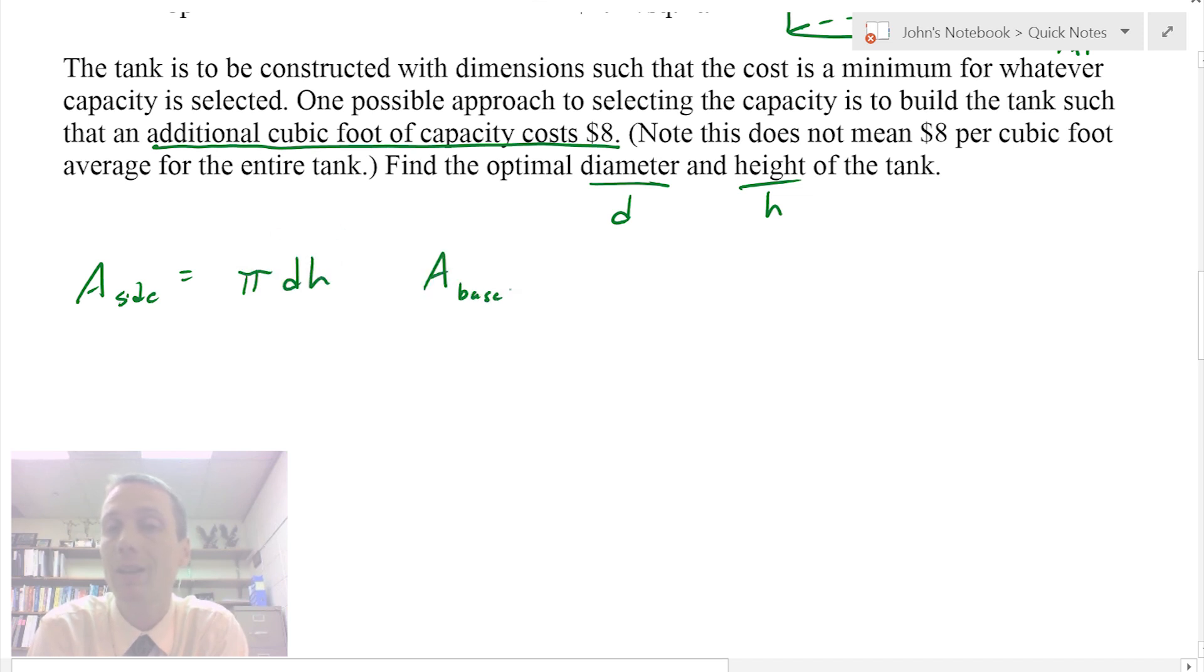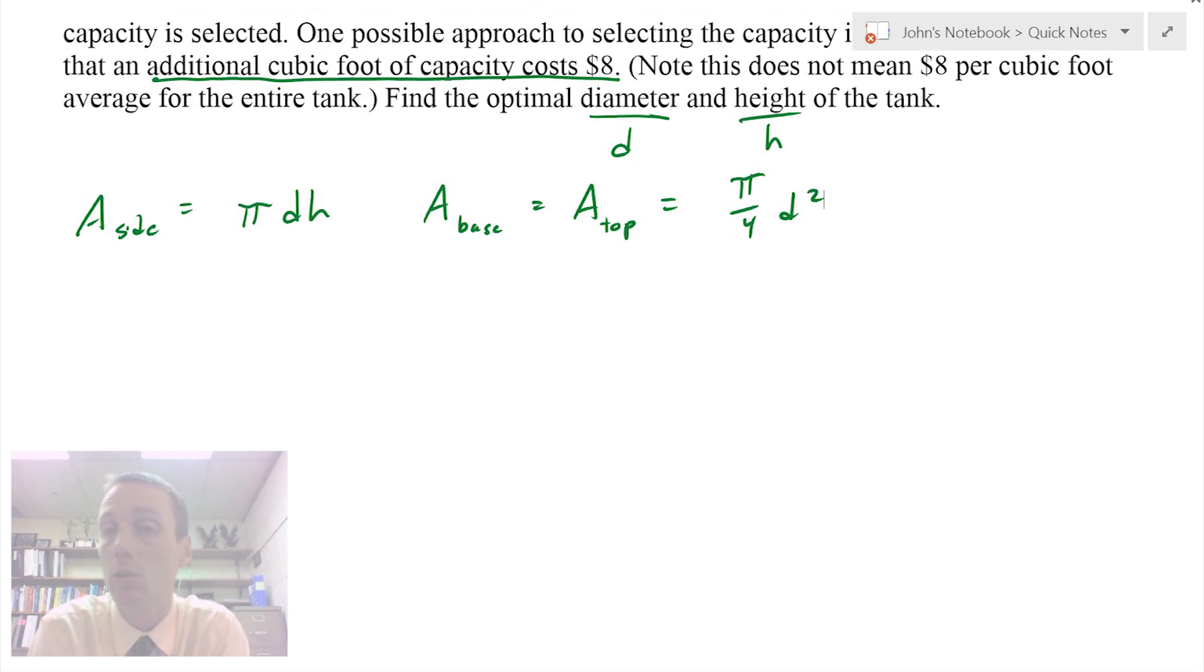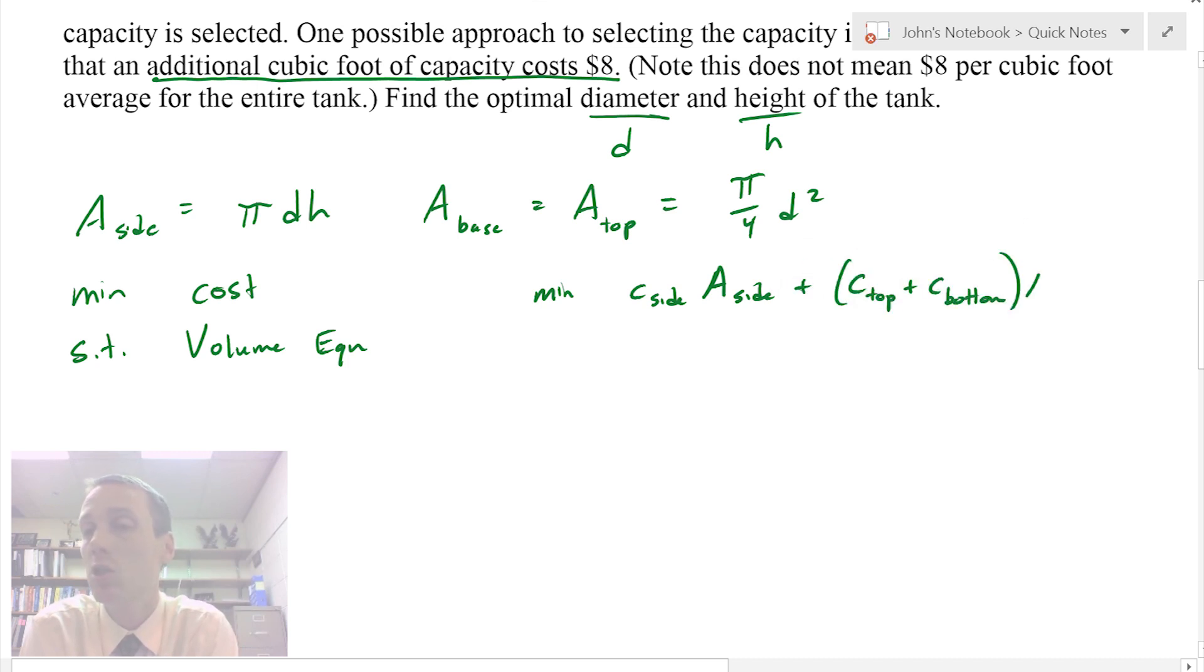First, we'll write out the area equations. The area of the side, and the area of the base and top are equal to each other. Then I'll write out the optimization problem: minimize the cost subject to the volume equation. The cost is the cost per square foot times the area for the side, and also for the top and bottom. Let's add those two costs together and multiply by the area of the base.